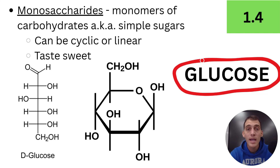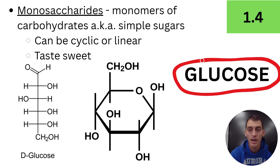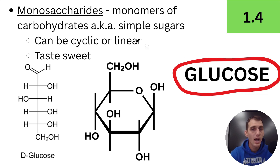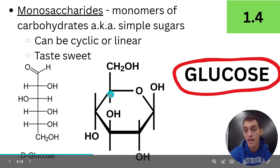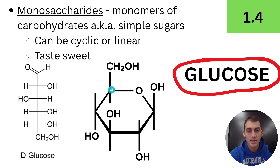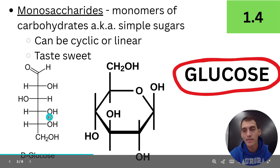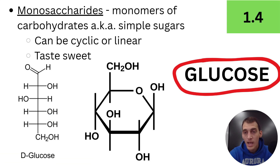Fructose is another example of a monosaccharide — you may have heard of it in the context of high fructose corn syrup. That's another example of a monosaccharide and a monomer of a more complex carbohydrate. Monosaccharides can either be linear, where the carbons are lined up in a straight line, or they can form a cyclic shape — a pentagon or hexagon shape in some cases. These simple sugars taste sweet — glucose and fructose are examples of sweet-tasting monosaccharides.